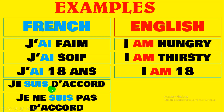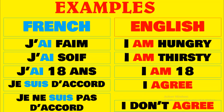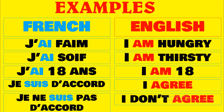Many people translate 'Je suis d'accord' into English by saying 'I am agree.' No — don't say 'I am agree.' The correct form is: I agree. I do not agree. Don't use the auxiliary 'be' in this case.